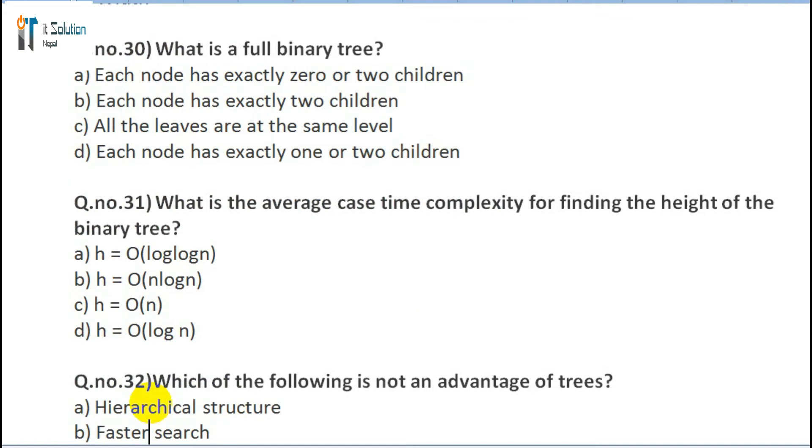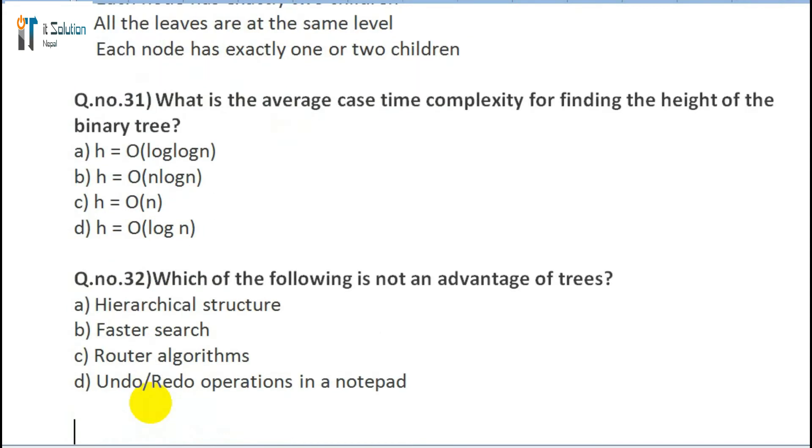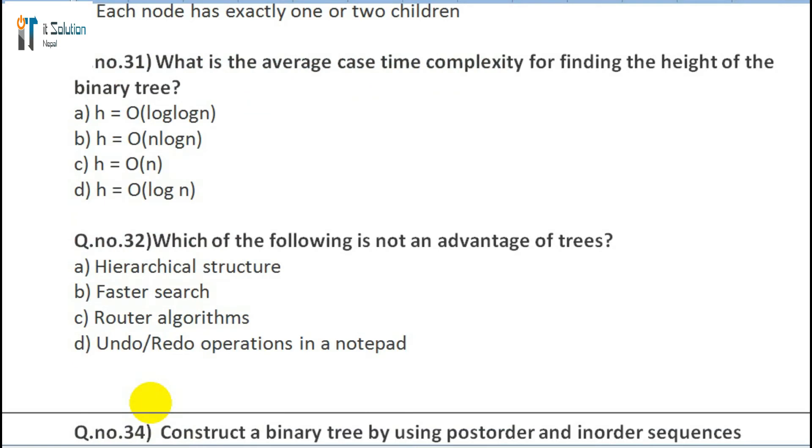Question 31: What is the average case time complexity for finding the height of a binary tree? A) h = O(log log n), B) h = O(n log n), C) h = O(n), D) h = O(log n). Question 32: Which of the following is not an advantage of trees? A) Hierarchical structure, B) Faster search, C) Router algorithm, D) Undo/redo operations in notepad.